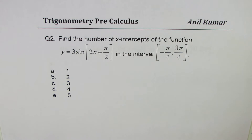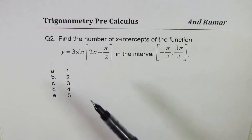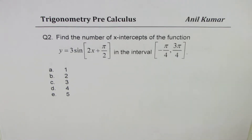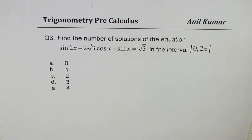Question number two: find the number of x-intercepts of the function y equals 3 sin(2x + π/2), with the interval changed to −π/4 to 3π/4. Question number three: find the number of solutions of the equation sin 2x + 2√3 cos x − sin x equals √3 in the interval 0 to 2π.